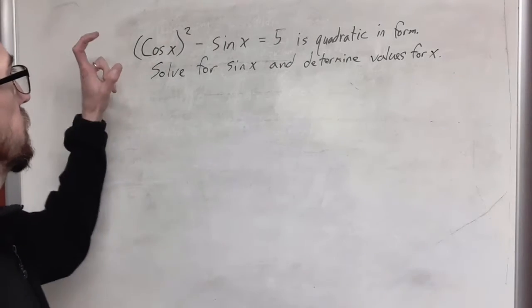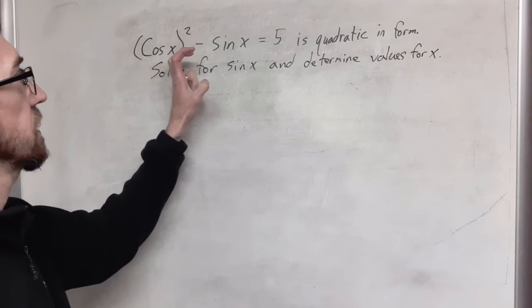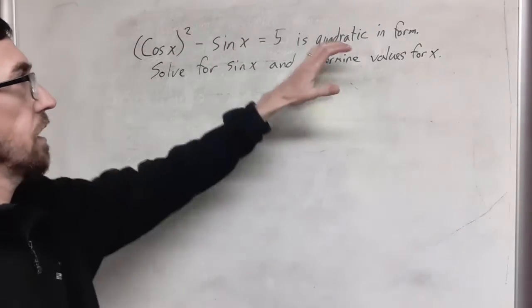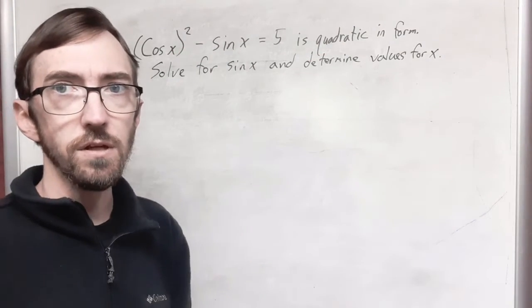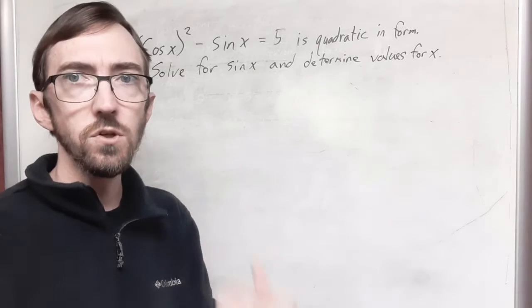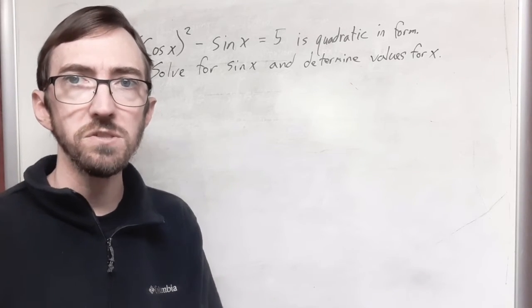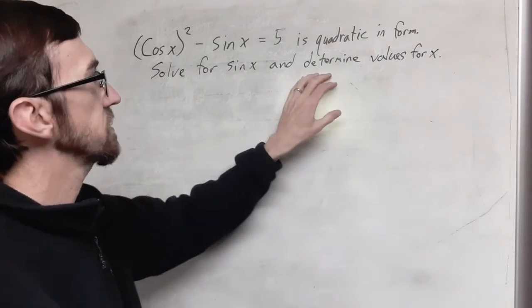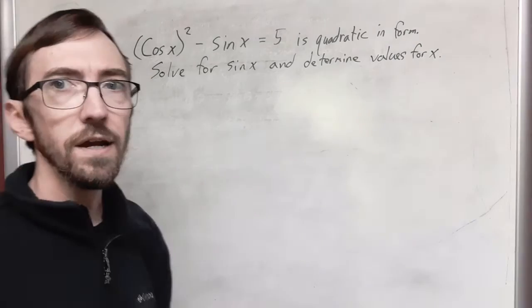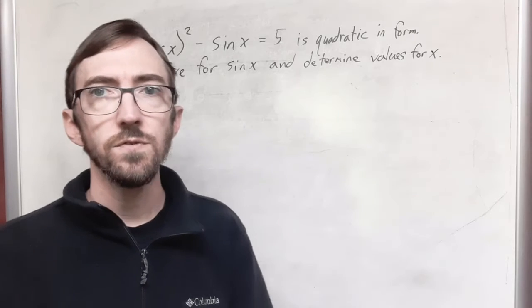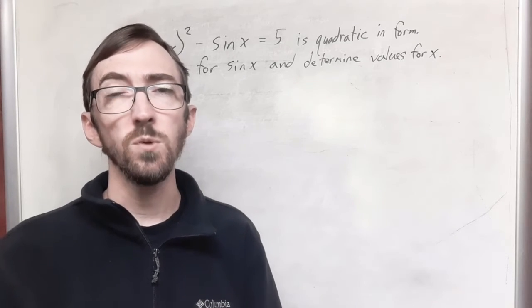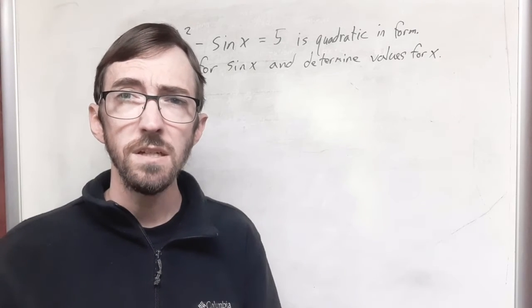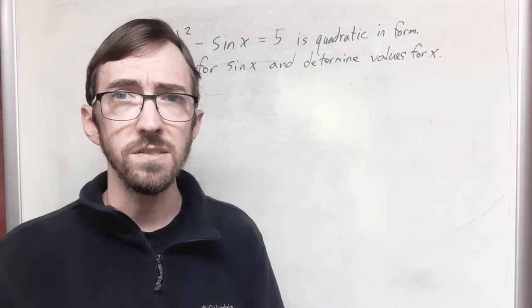So we're given this problem that cosine squared x minus sine x is equal to 5. They tell us it's quadratic in form, so this is a strong hint in how we are expected to solve this. And then it says solve for sine x and determine values for x. I think as far as being given a problem, this gives you a lot of information and really guides you through the process.